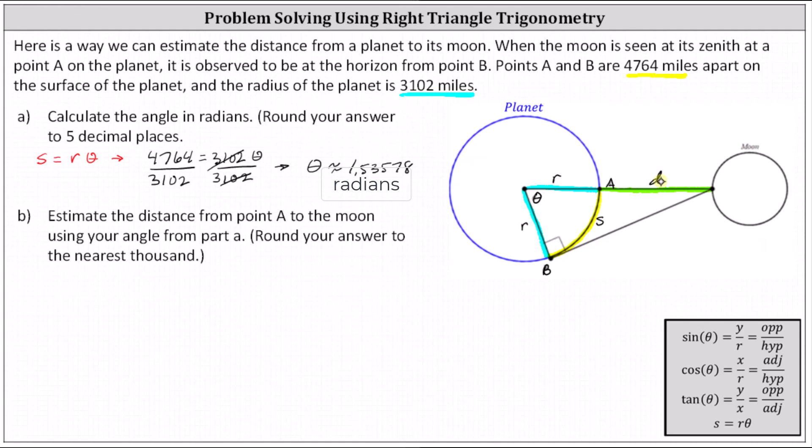And now we can determine D using the right triangle from the given information. Notice in relation to the angle theta, the distance from the center to point B is the adjacent side with a length equal to the radius, and the hypotenuse has a length of r plus D.